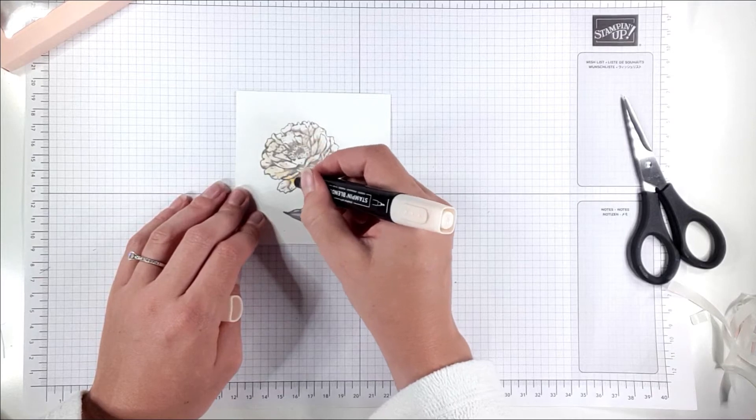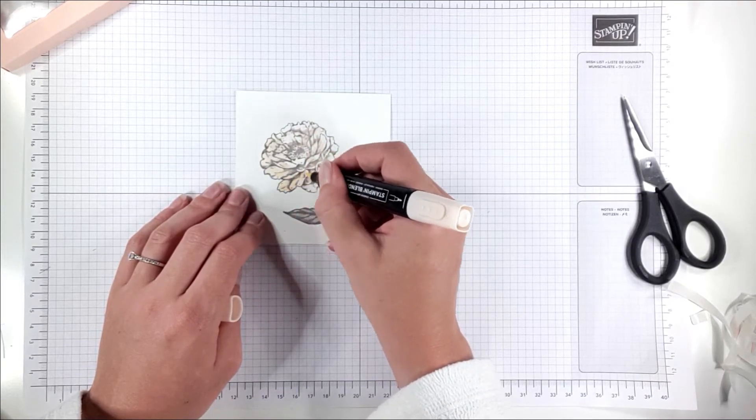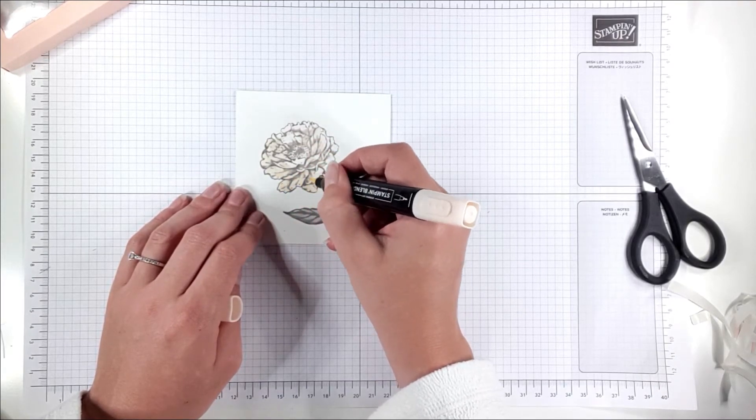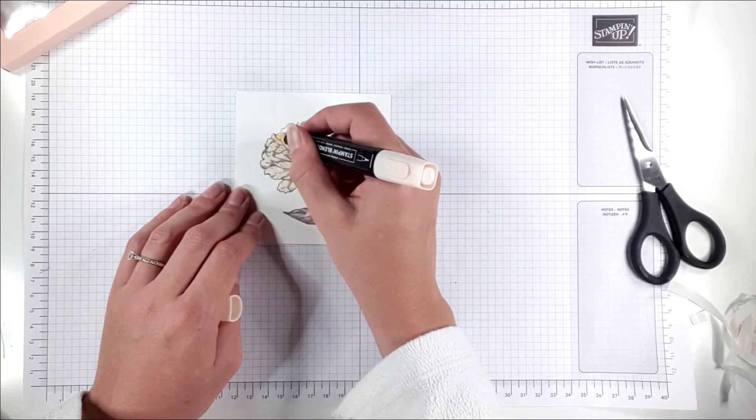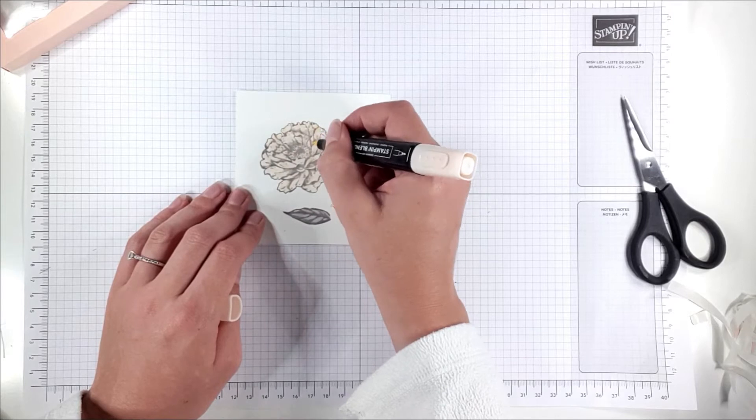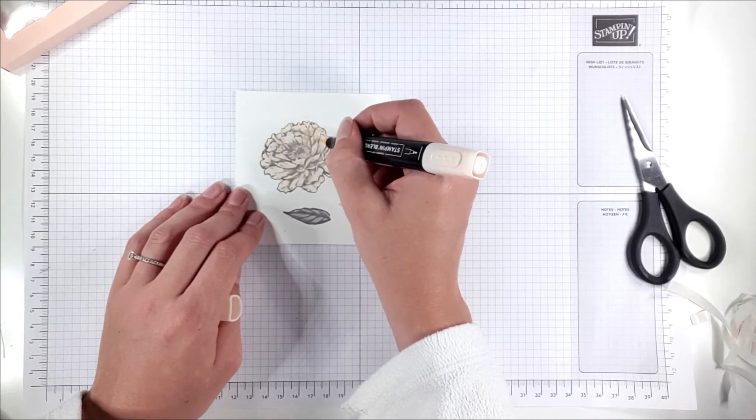It's important to remember to use your dye-based inks for colouring with Stampin' Blends or any other alcohol markers. The image won't smudge when you're colouring if you colour over the lines.